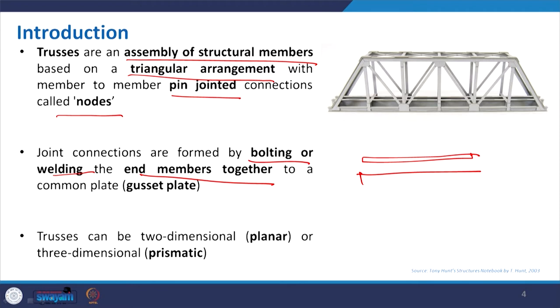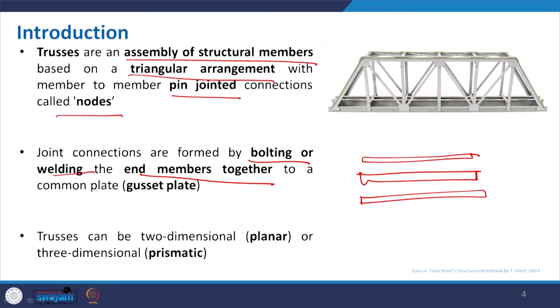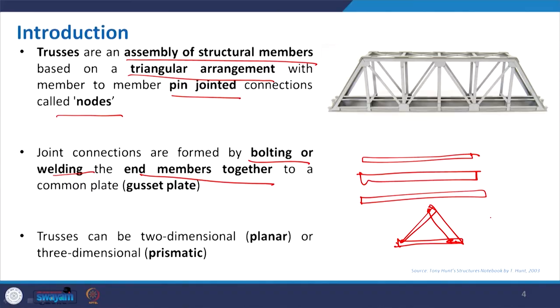Whenever we see a truss, we have multiple members — it may be an I-section, wooden batten, or wooden block. When we arrange those in a triangular form it will be more rigid and stable at the joint. Depending on the load it can carry, the number of members will be decided and the arrangement will also differ. The angle will be determined based on whether it will have a low rise or high rise.